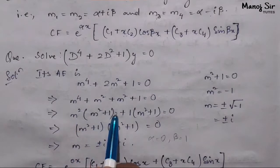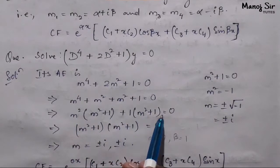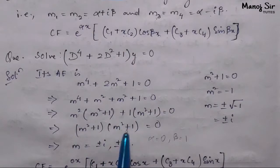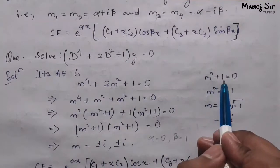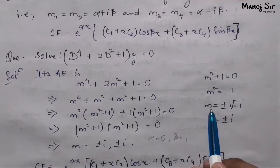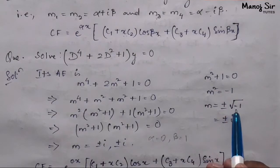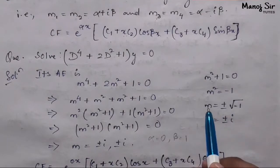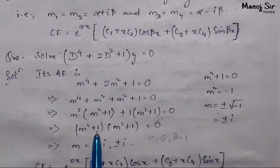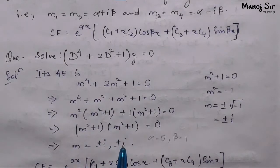Factoring: m⁴ + 2m² + 1 equals (m² + 1)² = 0, giving m² + 1 = 0. Therefore m² = -1, and m equals plus or minus the square root of -1, which is i. So m equals plus or minus i from each factor.